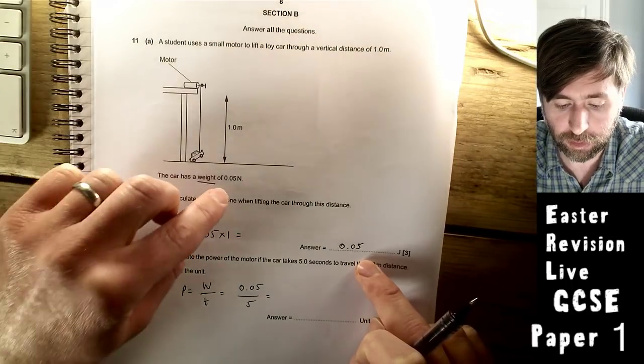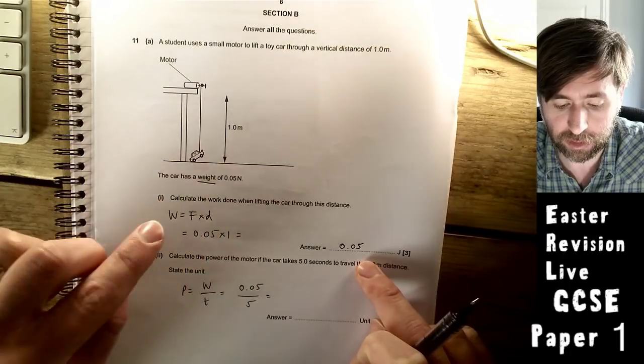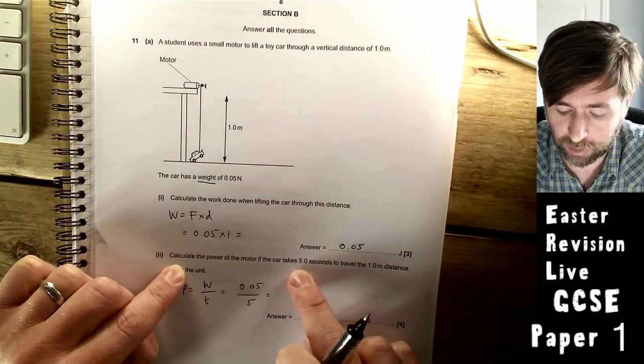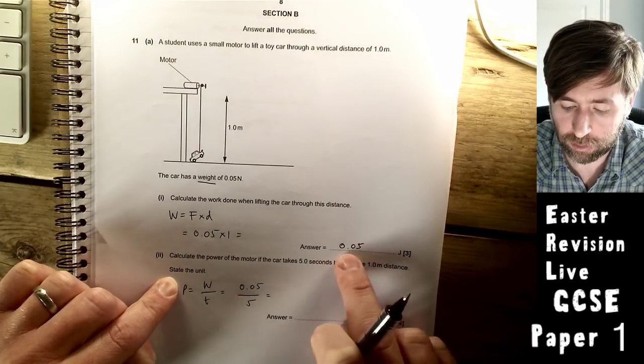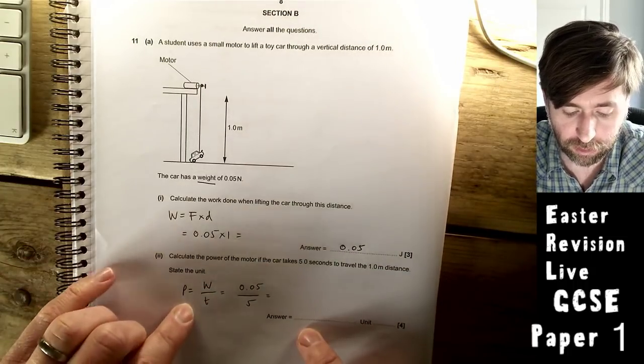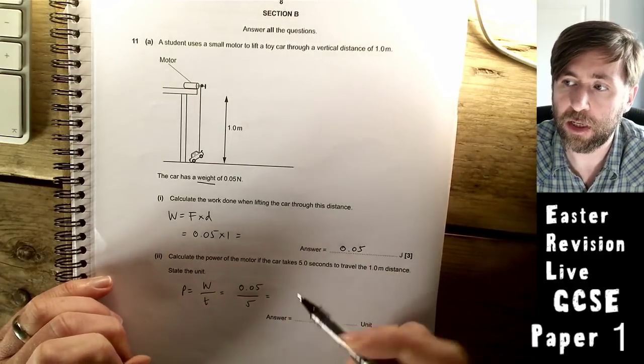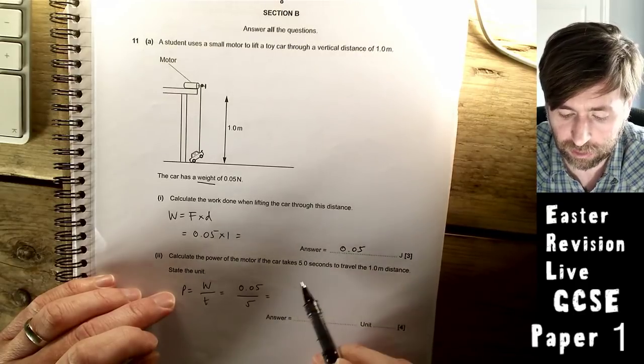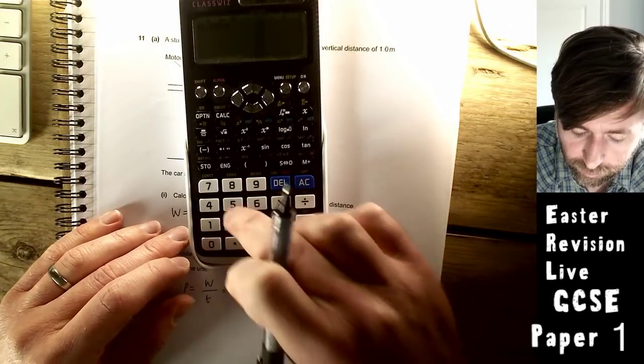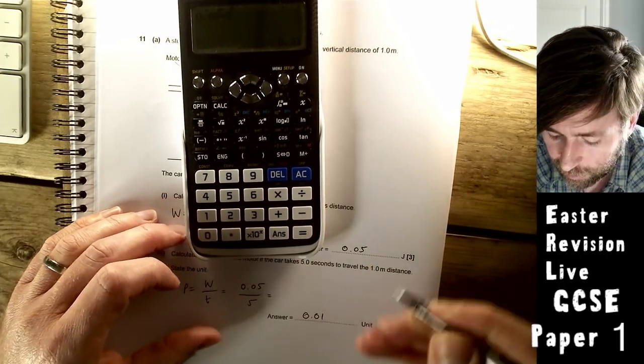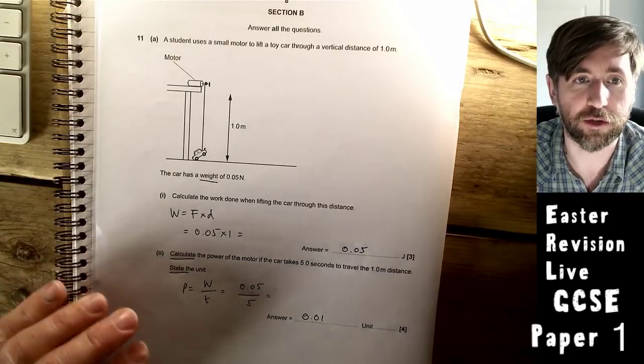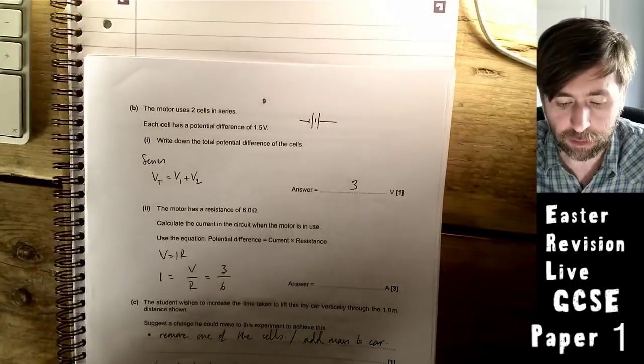Calculate the power of the motor if it takes five seconds to travel one meter. We know the work done from the previous one, and you would get error carried forward. The definition of power is the rate of transfer of energy, or work done over time. So the work done is 0.05 and five seconds. Just checking seconds and joules are correct. 0.05 over 5 gives us 0.01. Now check we've done everything. State the unit. The unit of power is watts.